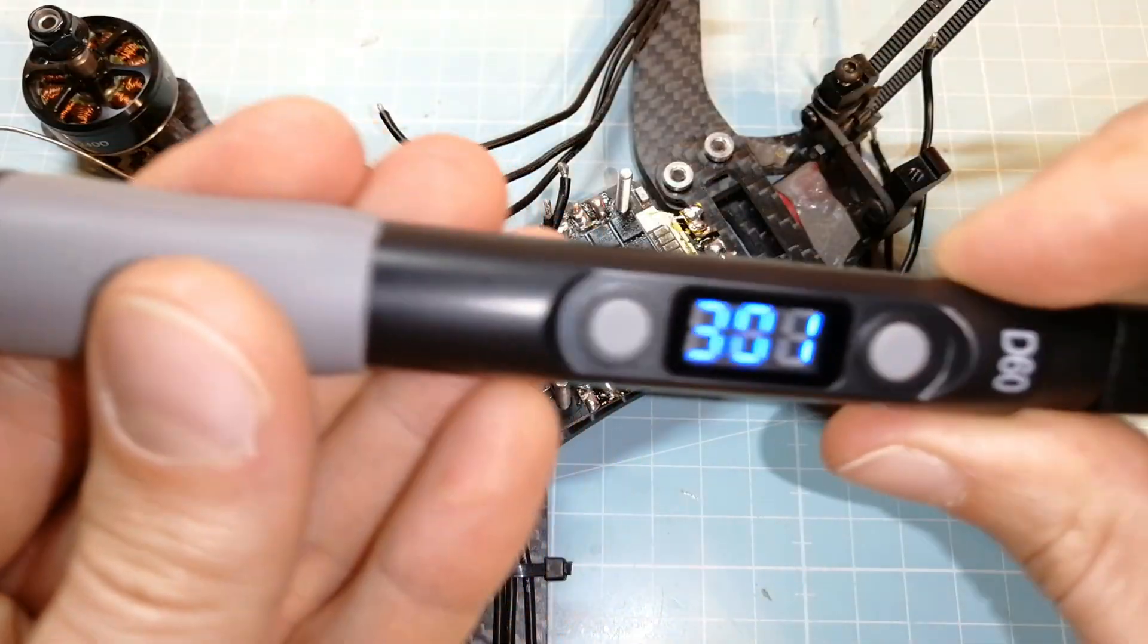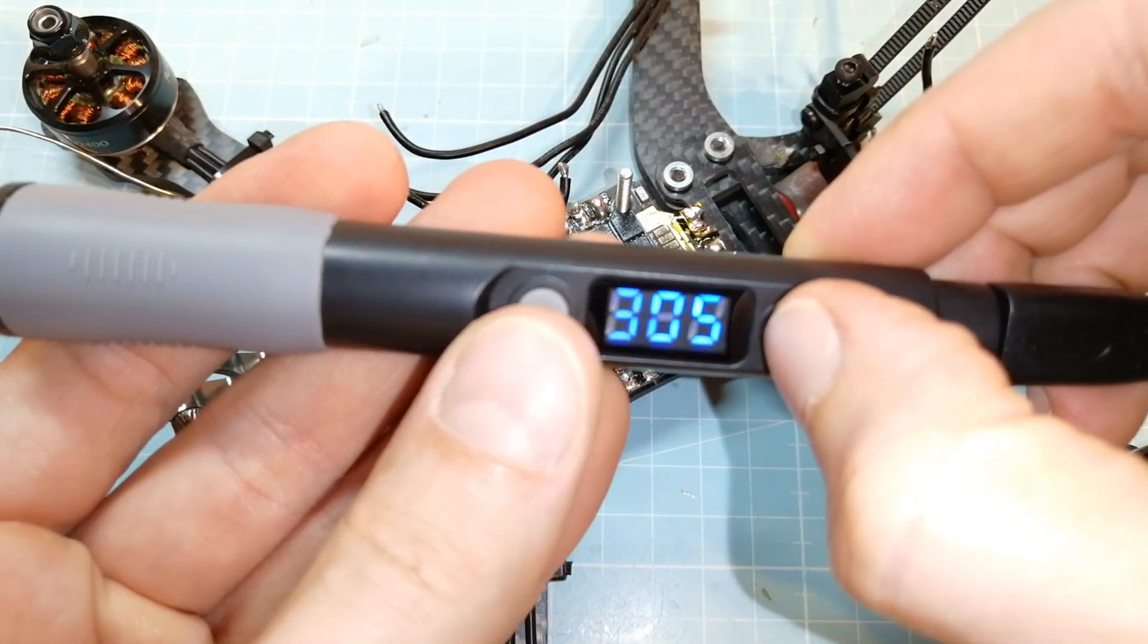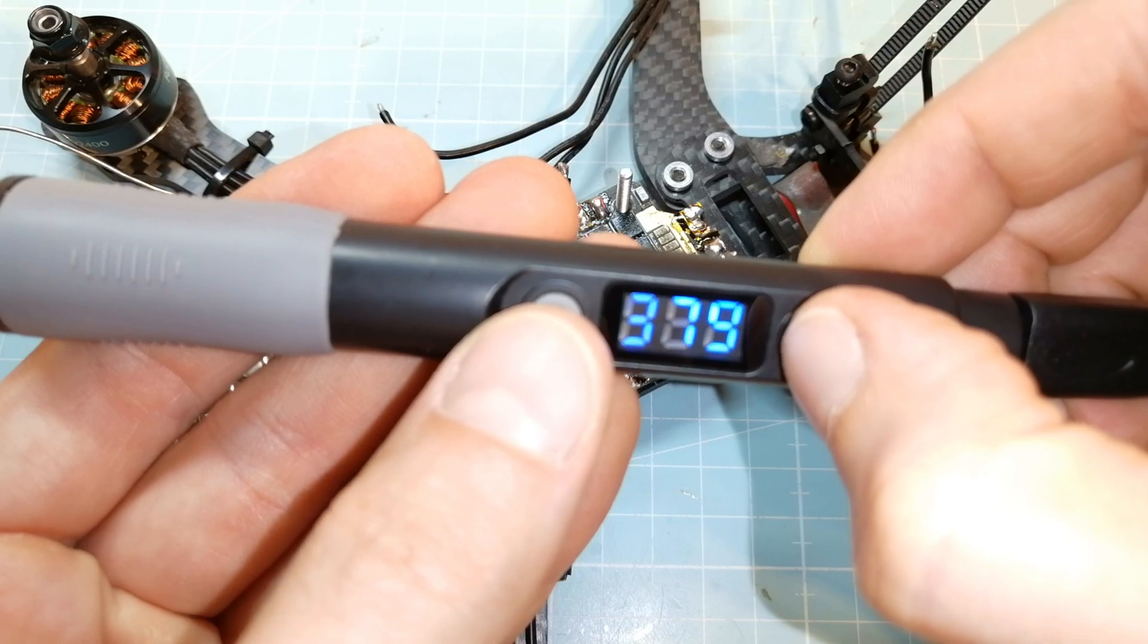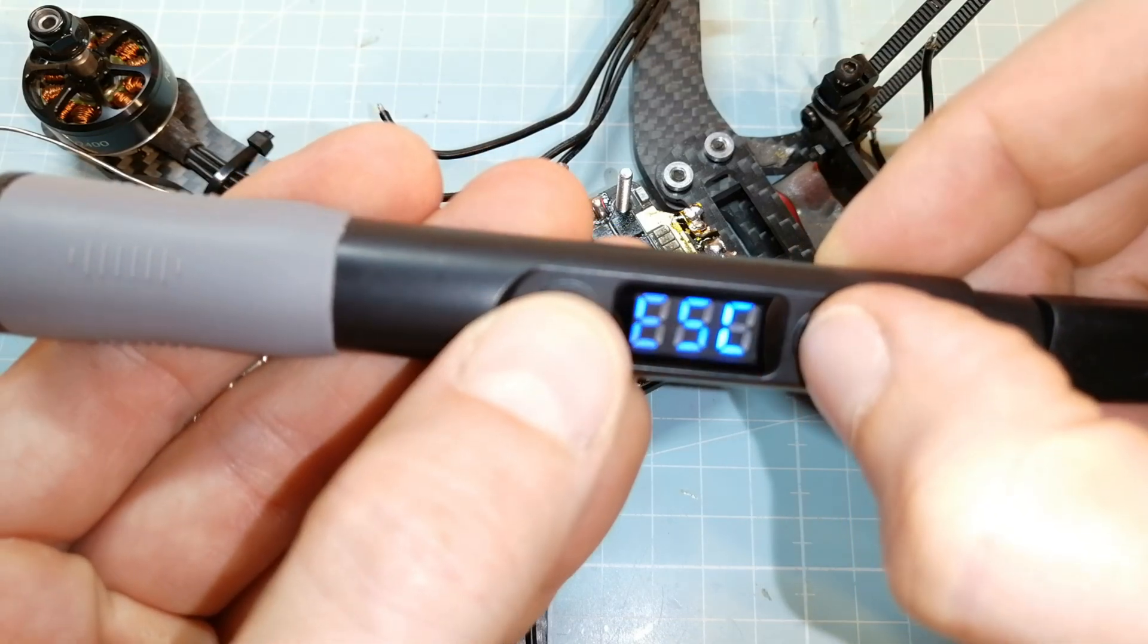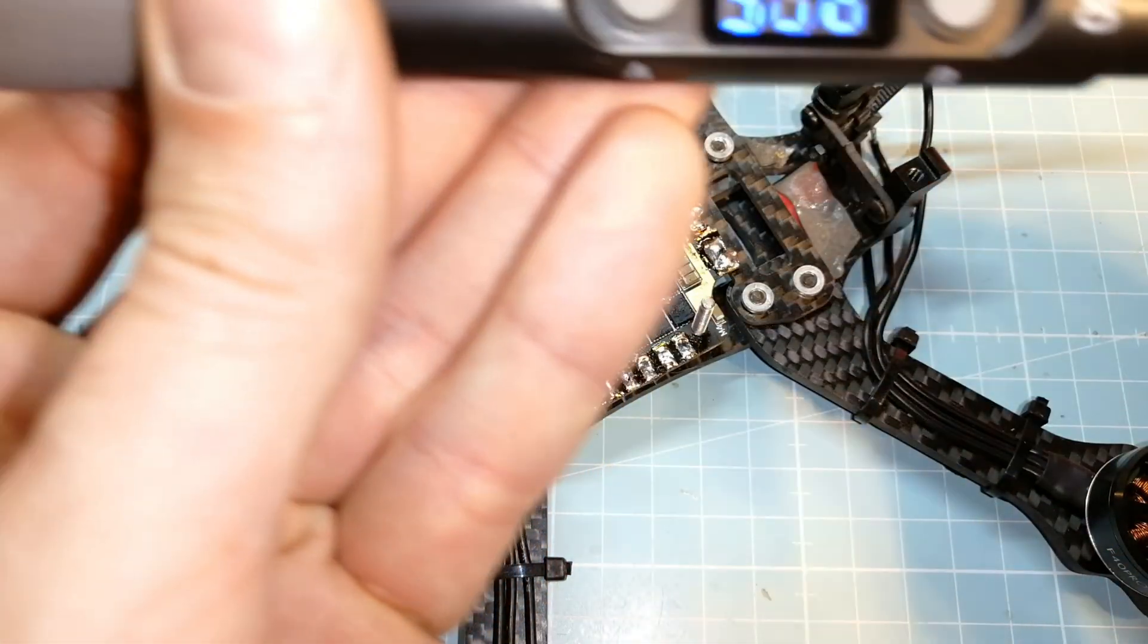Next we increase the working temperature up to 400 degrees in order to give it a chance to solder the motor wires onto the ESC solder pads even with this small soldering iron tip.